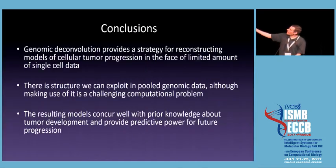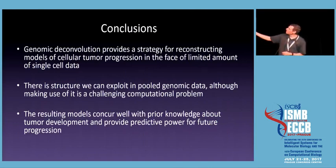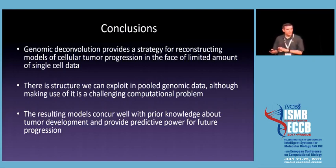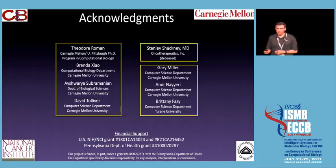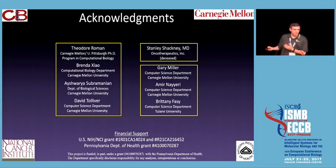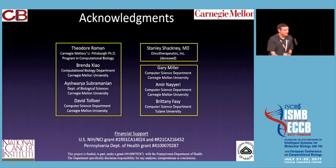To wrap up: genomic deconvolution provides a strategy for reconstructing at some level the clonal evolution of tumors, and there is structure in this data that we can extract, though there are a lot of challenging computational problems in doing so. When we do this we get results that concur well with prior knowledge and do give us predictive power about future progression. Thanks to those from my lab who contributed to this work, our collaborators, financial support, and thanks to all of you for your attention.